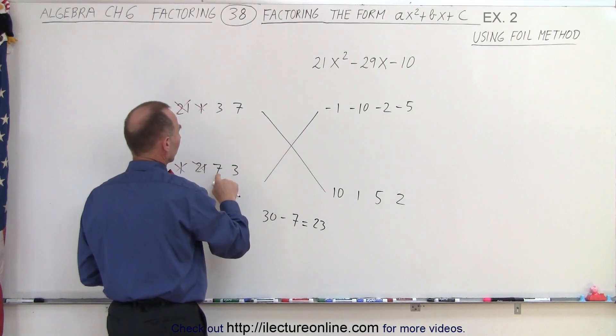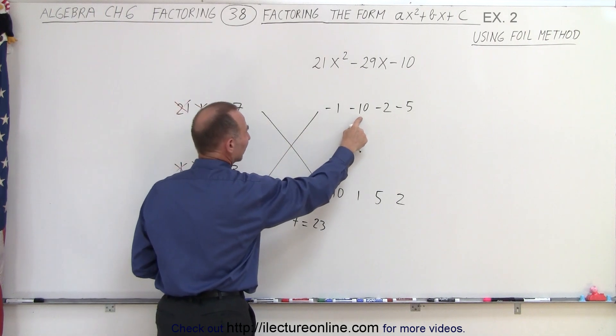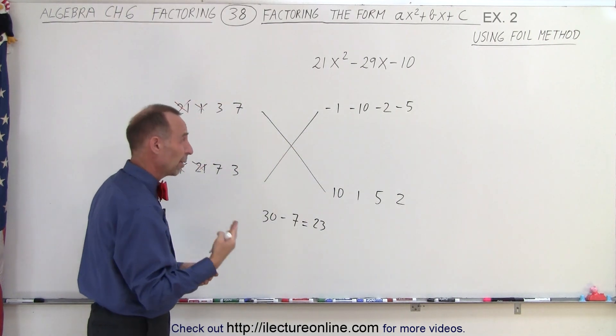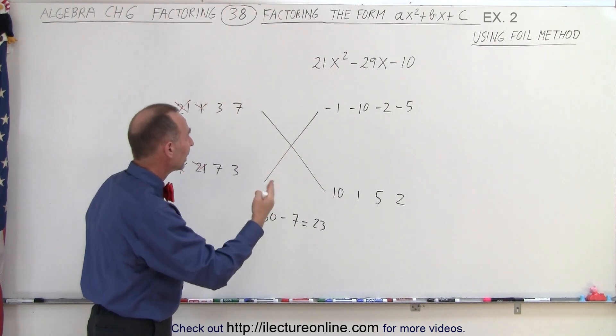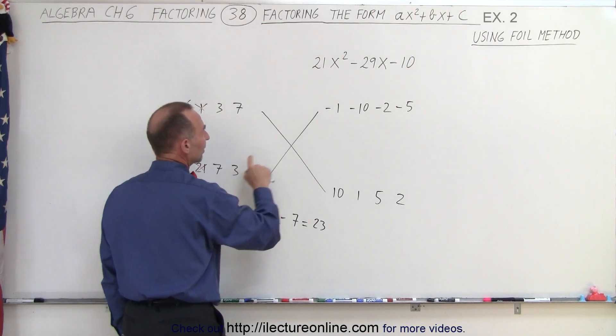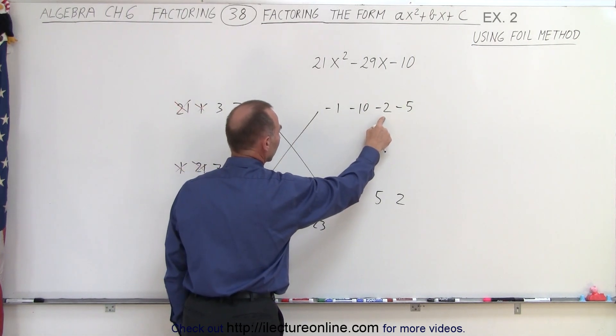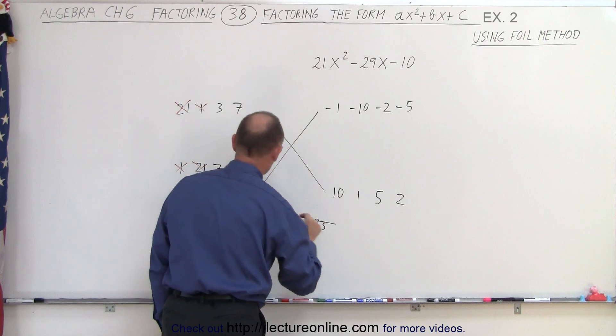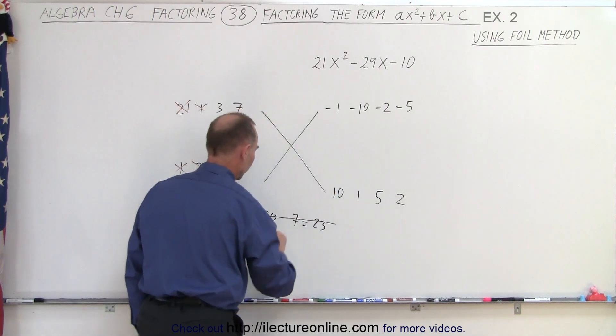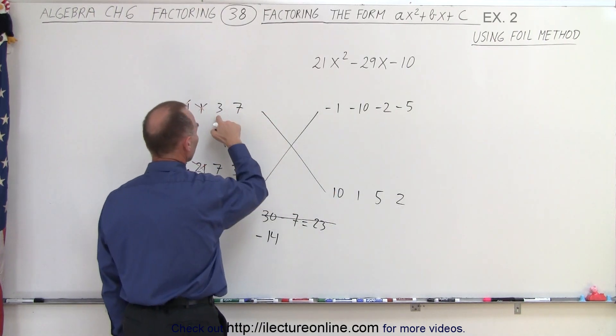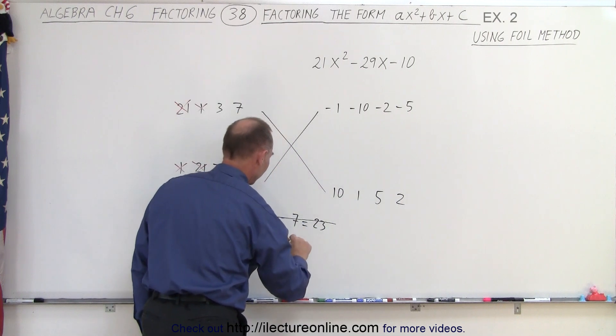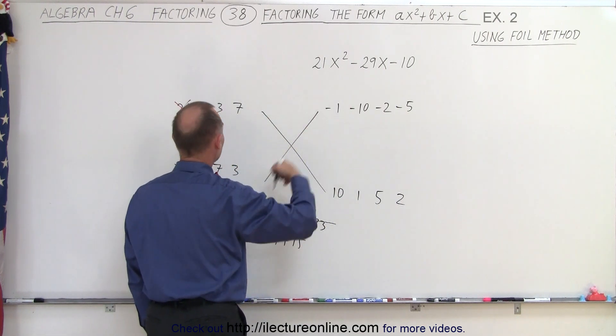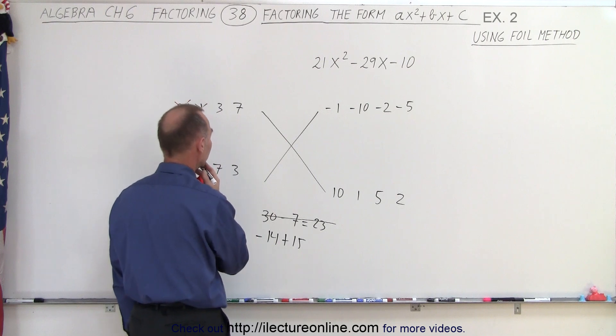How about 7 times negative 10? Well, that's already negative 70, so we probably don't want to try that. How about the next set, 7 times negative 2? Well, that gives us negative 14. So 7 times negative 2 is negative 14, and 3 times 5 is plus 15. Well, that doesn't give us negative 29, so that's not a possibility either.